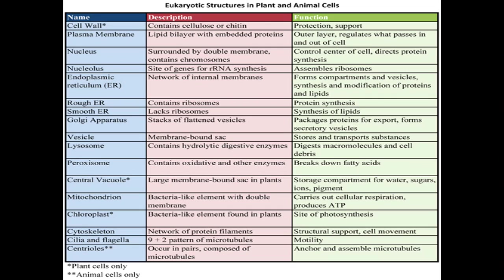Cilia and flagella have a 9+2 pattern of microtubules and their main function is motility or movement. Centrioles are the last organelle; they're only found in animals. They're composed of pairs of microtubules and their main function is to anchor and assemble microtubules, which mainly happens during mitosis.